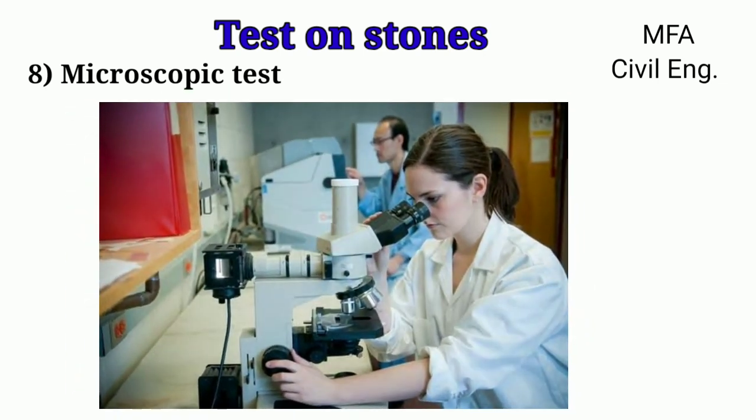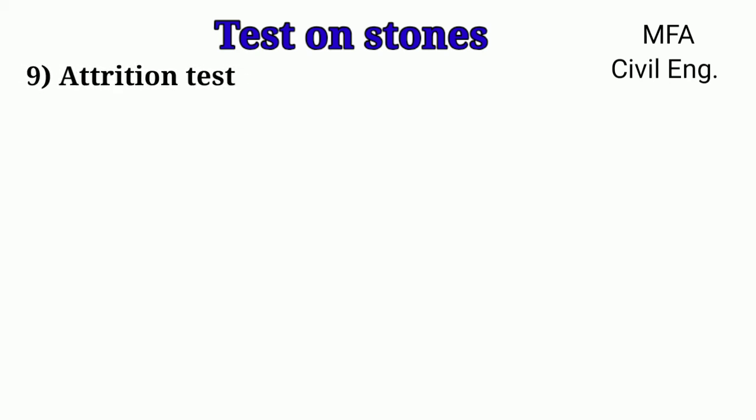Microscopic test: In this test, thin sections of stones are placed under a microscope to study various properties such as average grain size, nature of cementing material, texture of stones, mineral constituents of stones, existence of pores, fissures, and veins, and the presence of any harmful substances.